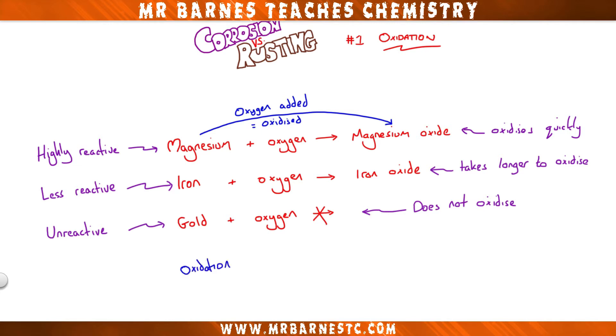Now, for those of you doing the higher paper, oxidation is also described as the loss of electrons. So the more reactive the metal, the quicker it is to lose its electrons, meaning it will oxidise quicker.